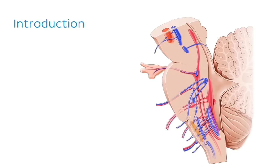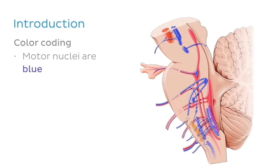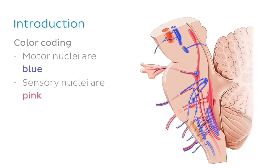In our image here, we have motor nuclei in blue, and these give rise to axons that later bundle up to become motor nerves and control specific muscles. We also have sensory nuclei in pink, and they receive fibres conveying sensory information.